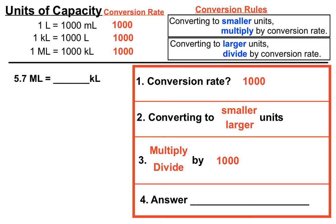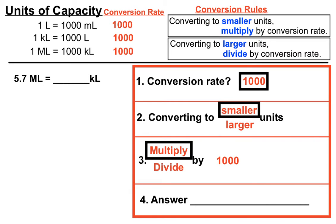Let's look at a few examples. First: 5.7 megalitres — we want to convert to kilolitres. The conversion rate is a thousand. We're converting to smaller units, since kilolitres are smaller than megalitres. Checking our conversion rules, converting to smaller units means we multiply by the conversion rate. So we multiply by a thousand, meaning the decimal point moves three places to the right, giving us 5,700 kilolitres.